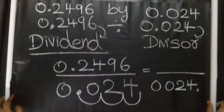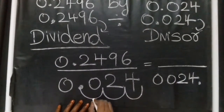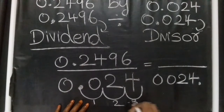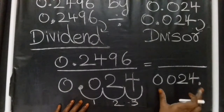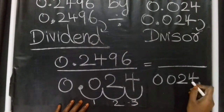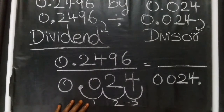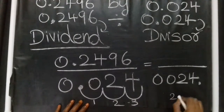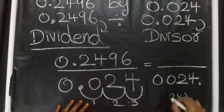So how many steps are we going to jump? One, two, three steps to move. So we move the decimal point three steps to the right in the divisor. Now we are going to make it a natural number. So zero, zero, two, four — that means twenty-four. The divisor becomes 24.